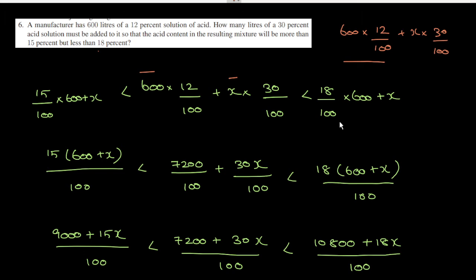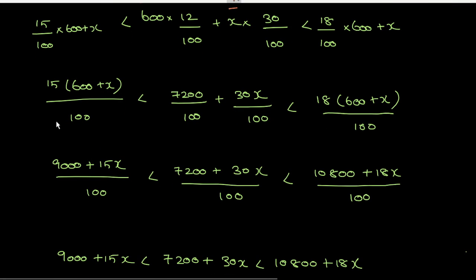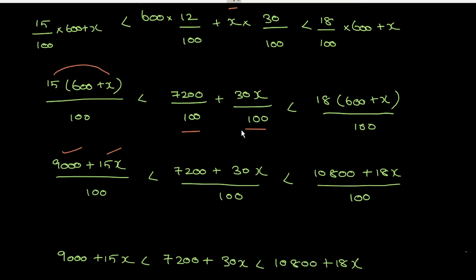Expanding: 600 into 12 is 7200, plus 30x, divided by 100. And 18 into 600 is 10,800, plus 18x, divided by 100. Since the denominator is the same on all sides, we can cancel the 100.